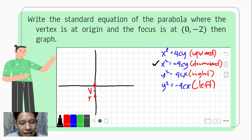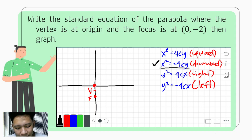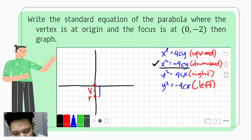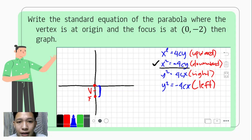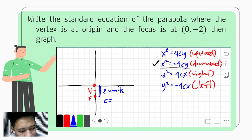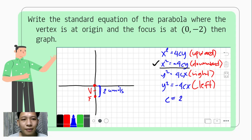So we'll be using x squared equals negative 4cy. Now, by looking at the points of the vertex and the focus, how many units is the distance between them? From the origin down to (0, negative 2), the distance is 2 units downward. This means the value of C would be 2 units.